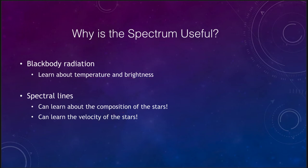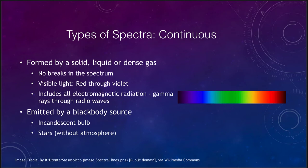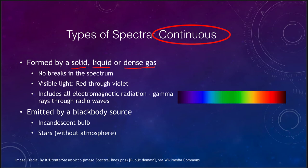So what are the different types of spectra that we see? First, we can see an example of a continuous spectrum. A continuous spectrum is formed by a solid, a liquid, or a dense gas — which takes care of lots of objects we're used to thinking of here on Earth, but not as much when we look out in space. A continuous spectrum is just that — continuous with no breaks in it, going from all colors from violet on one end to red on the other without any breaks.